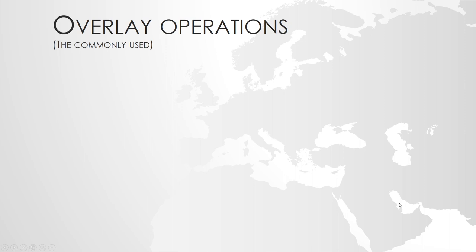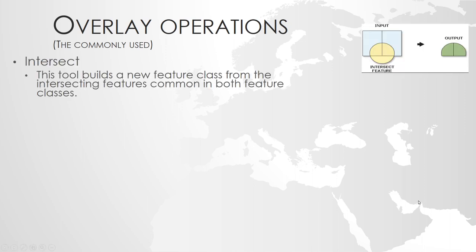So let's look at them in some detail. The first one, in more or less random order, is the intersection. The intersection tool takes two layers, takes the common area, and then generates all unique combinations. The objects have all the attributes from both input layers. So importantly, we have the common area and all attributes from both layers. An intersection can be used on polygon to point, polygon to line, or polygon to polygon, as in this example.